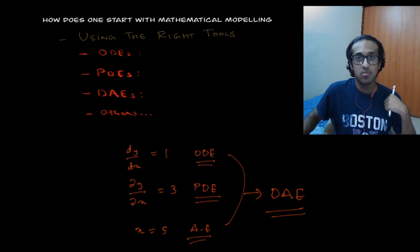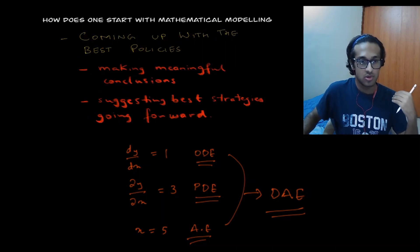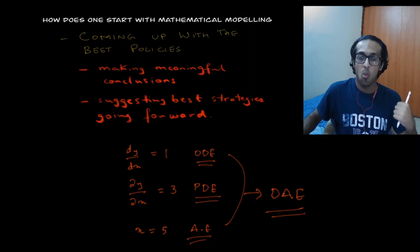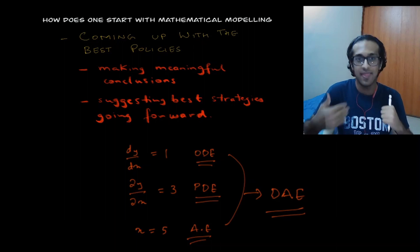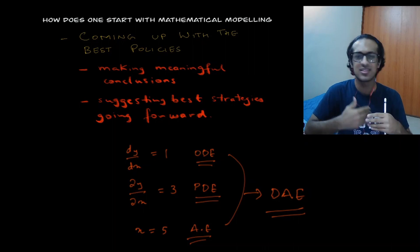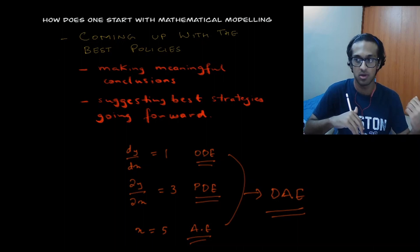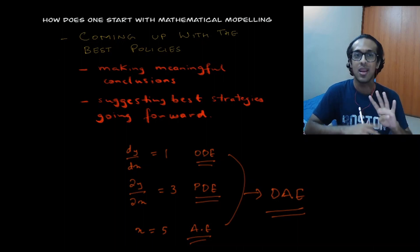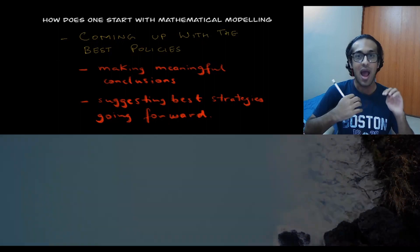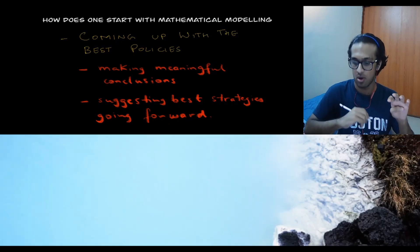And when I come to the last and the fourth and most important factor, it's once we actually use these tools and then solve it, it's to come up with the best policies. And when I say policies, I use it very loosely. I mean, by coming up with the most meaningful conclusions and coming up with the most insightful strategies on how to go forward and how to solve the problem. So these are the four main things I keep in mind when I start with a mathematical modeling problem.